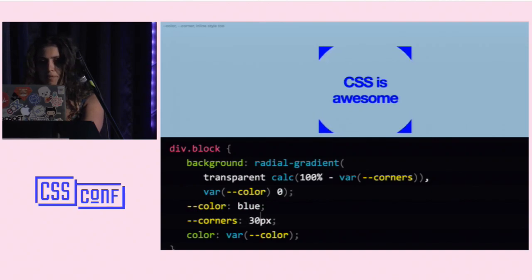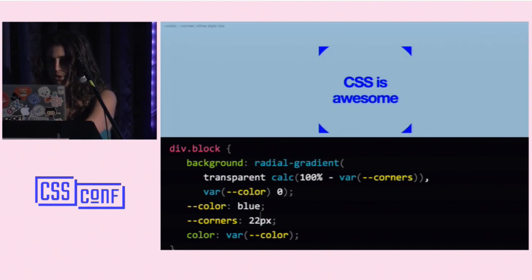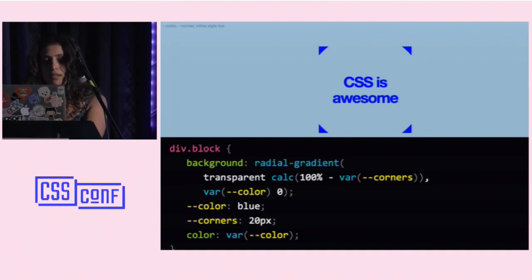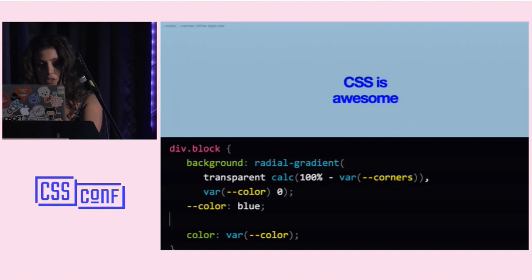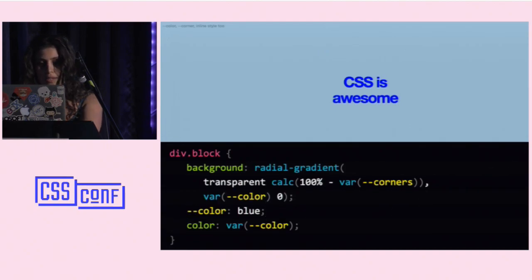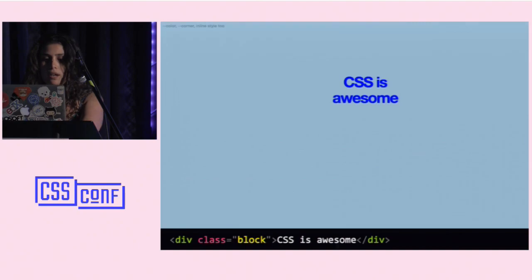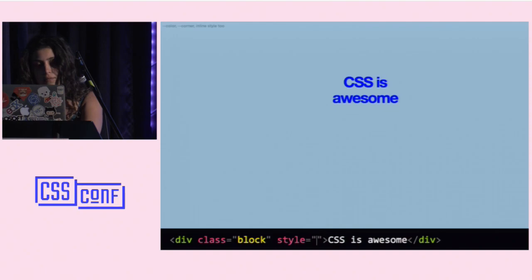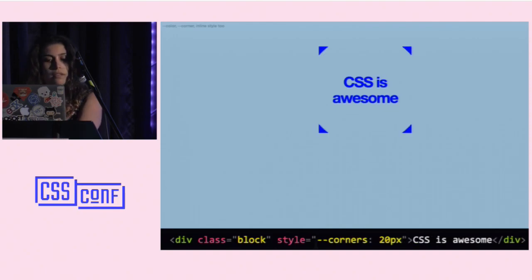You might still not be very impressed, because that was just one place in the stylesheet — why not just go there and specify 20 pixels directly? The thing is, just because CSS variables work just like any other CSS property, you can use them everywhere, even on inline styles. And it still works just the same.